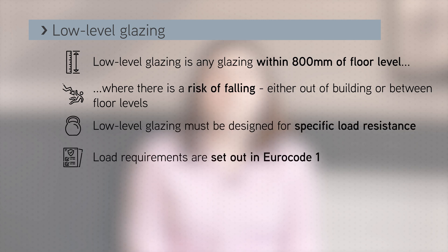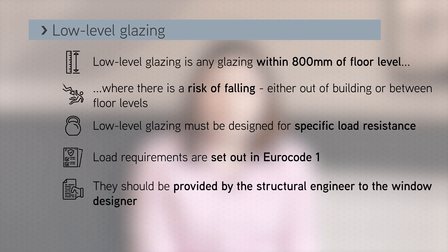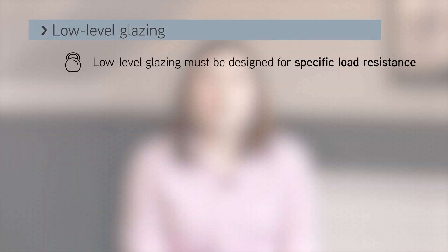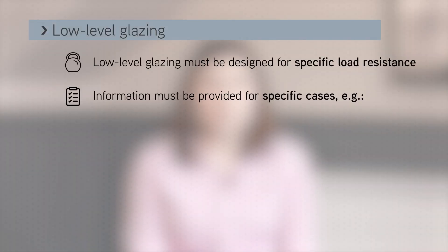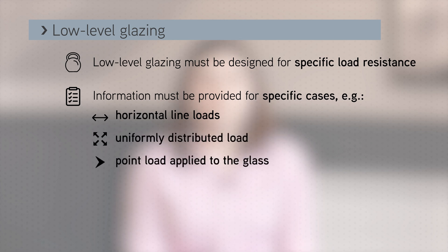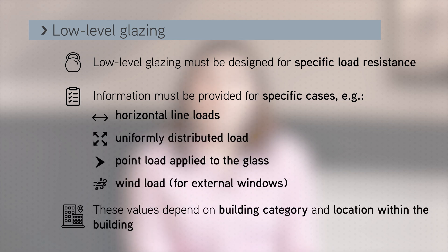Load requirements are set out in Eurocode 1 and should be provided by the structural engineer to the window designer. Information must be provided for certain specific cases, such as horizontal line loads, uniformly distributed load, point load applied to the glass, and wind load if it's an external window. These values depend on the building category and location within the building.